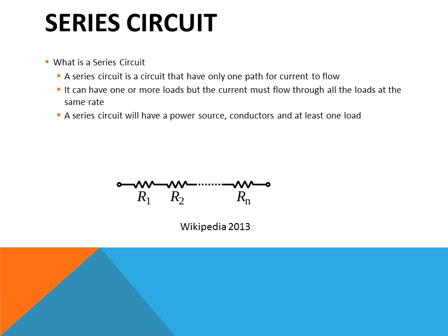A series circuit is a circuit that has only one path for current to flow. A load is anything that consumes electricity, such as a light bulb or electric heater; motors are loads too. A series circuit can have more than one load, but the current must flow through all loads at the same time at the same rate. It will have a power source, conductors, and at least one load. A familiar example is Christmas tree lights — if one bulb is removed, they all go out because removing one load creates an open circuit.